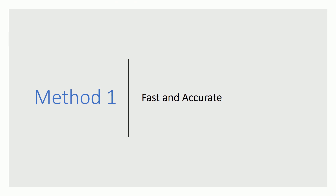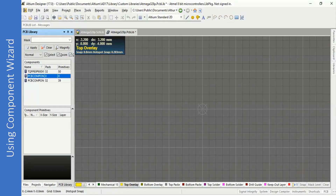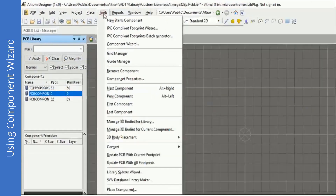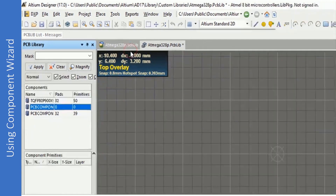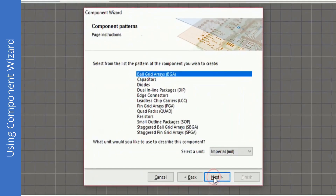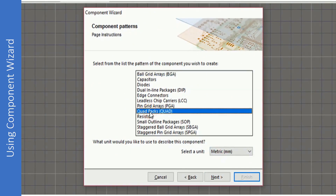Now that you have seen method one, you must have realized it is very easy to create accurate footprints using this wizard — you just find the right information from the datasheet, enter it, and the wizard creates an accurate footprint for you. Let us now look at method two, which uses the Component Wizard. Click on Tools and select Component Wizard. In the Component Wizard, press Next, select units as Metric and pattern type as Quad Packs, and click Next.